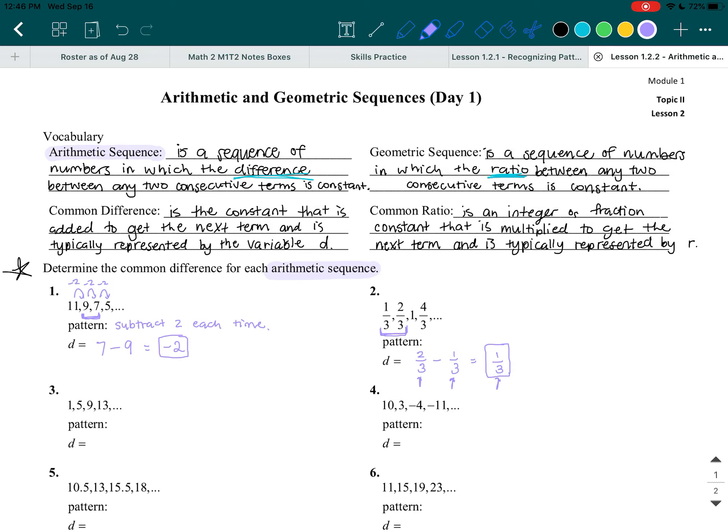So we have that our common difference is 1 third. Notice that it is a positive 1 third, which means that this time, instead of subtracting a third, we are adding a third. So the pattern is to add 1 third each time.